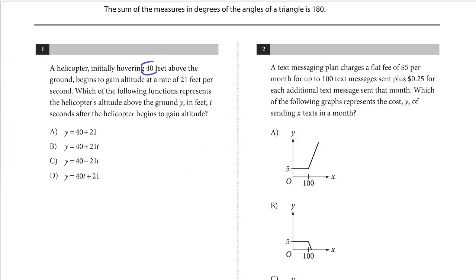So initially hovering at 40 feet. So if you think about it, initially, let's say this is 40 feet. That's before it had begun to gain altitude, before the slope even played into effect, came into effect. And so initially it was 40. And then it started gaining altitude at 21 feet per second.